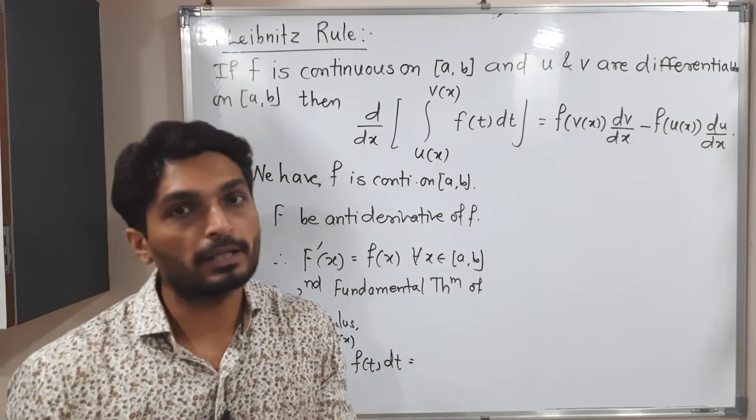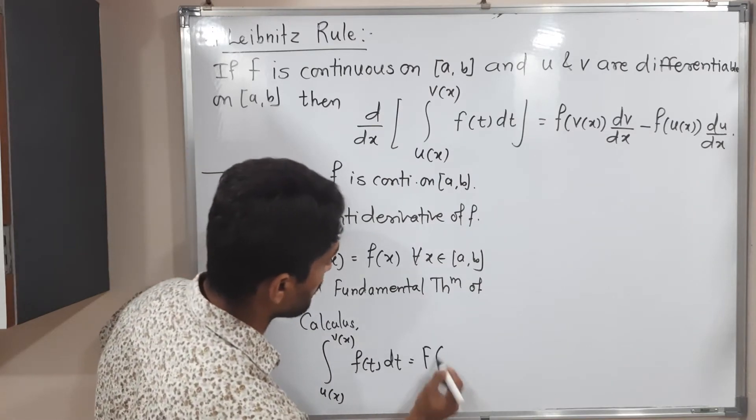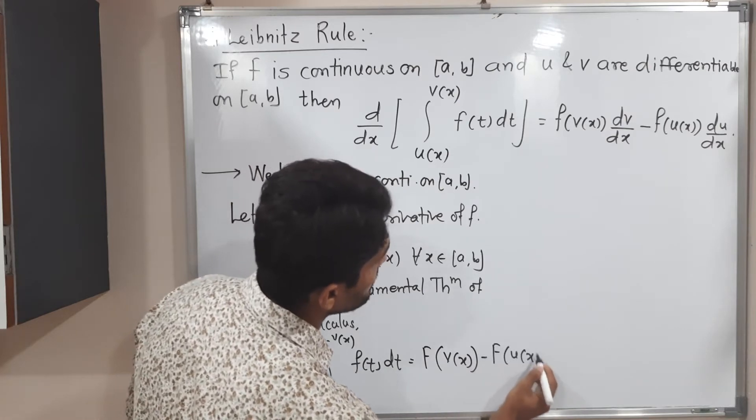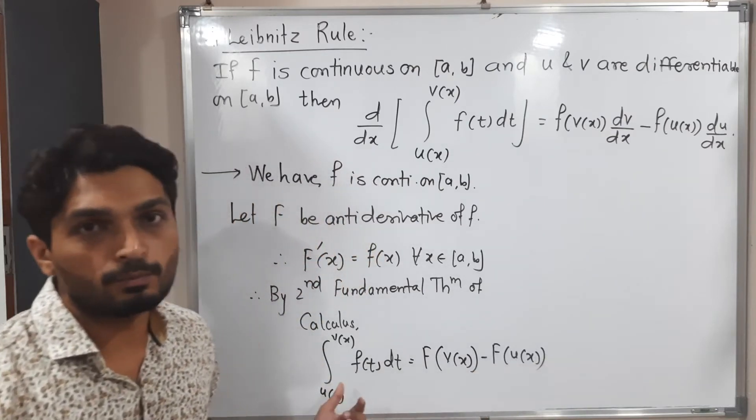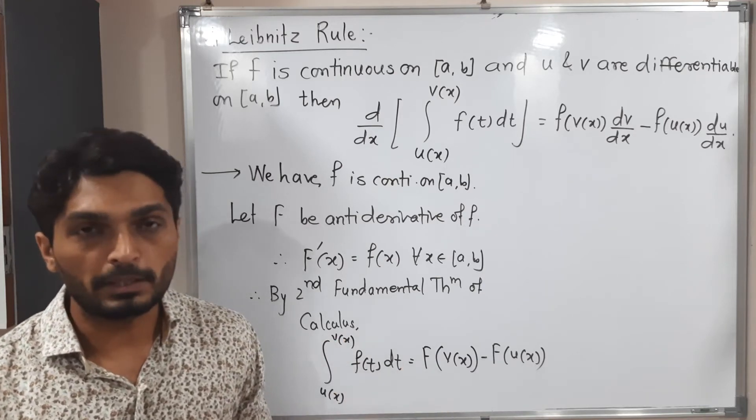So by second fundamental theorem of calculus says this is capital F of v of x minus capital F of u of x. Since capital F is integration of small f, that's why directly we put upper limit minus we put lower limit. After that, we are going to take derivative of both sides.